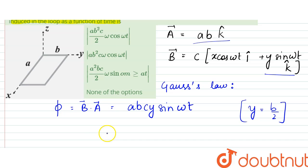So we can write this to be equal to ABC into b by 2 into sine omega t.